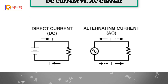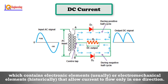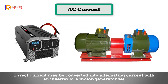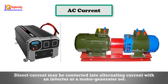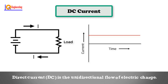Direct current may be obtained from an alternating current supply by use of a rectifier, which contains electronic or electrochemical elements that allow current to flow only in one direction. Direct current may also be converted into alternating current with an inverter or a motor generator set.